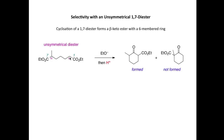If we deprotonate at carbon atom 2 and cyclize onto the ester at position 7, then we form this six-membered ring here. If we deprotonate at position 6 and cyclize onto this carbonyl at position 1, then we would end up with this six-membered ring here. In the reaction, only this first six-membered ring is formed, not this one here.